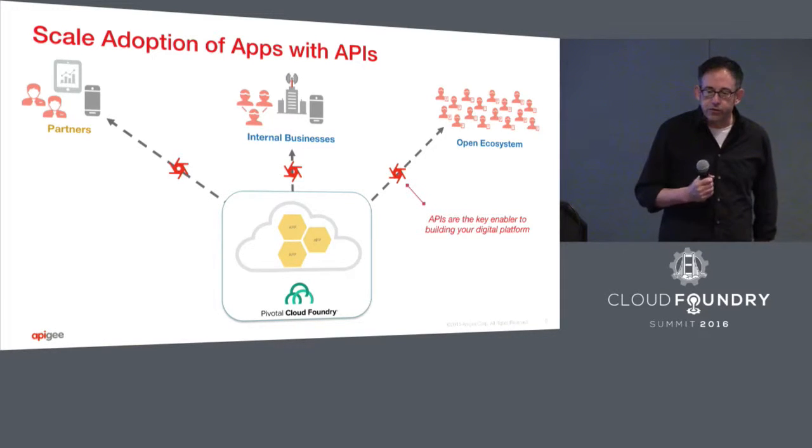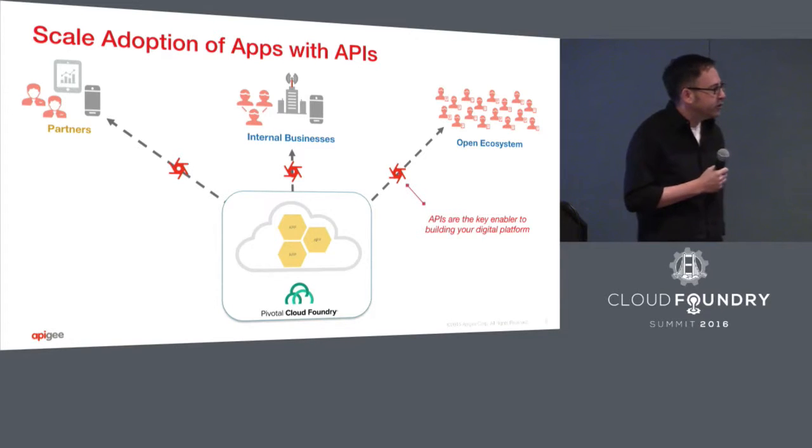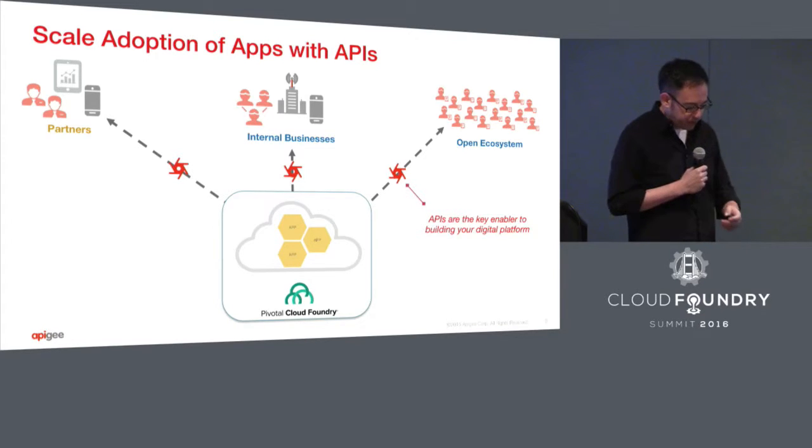When we started talking to Pivotal about this, really about 18 months ago, we said there needs to be some way of deeply embedding API management capabilities into Cloud Foundry in an elegant way that is part of your application life cycle. Route services emerged out of those conversations as a way to do that seamless integration.